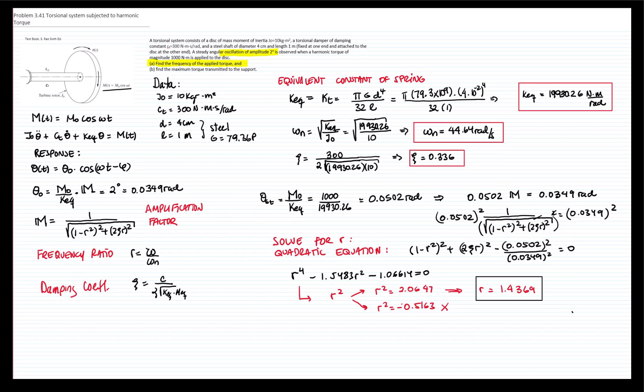Now, since we can relate r with omega and omega n and we do know omega n, so r is equals to omega over omega n. Therefore, omega is equals to r omega n. We know omega n from here. Therefore, our omega that we are looking for will be equals to 1.4369 times omega n, which is 44.64. And we get that omega is equals to 64.15 radians over second. And that's the solution we were looking for.